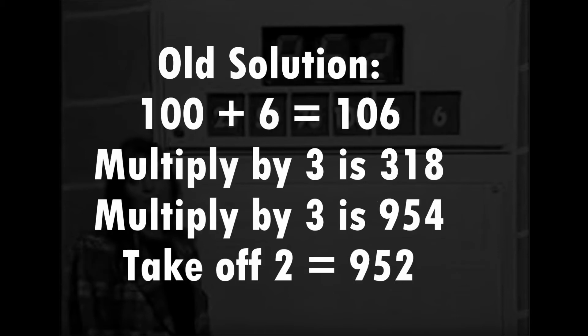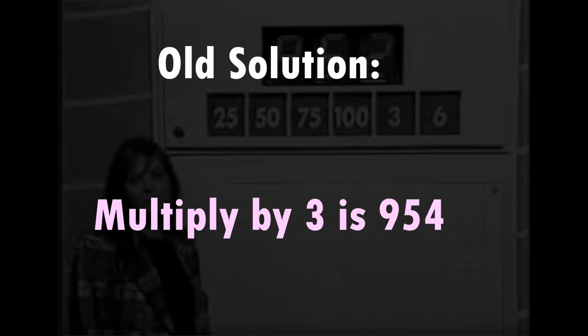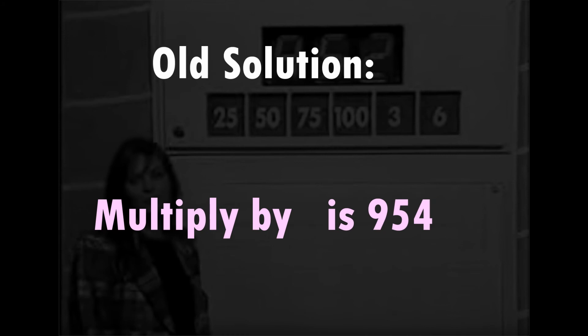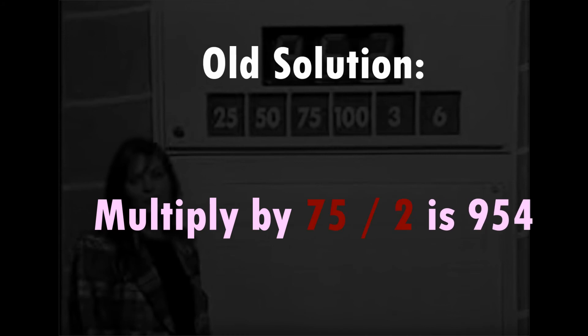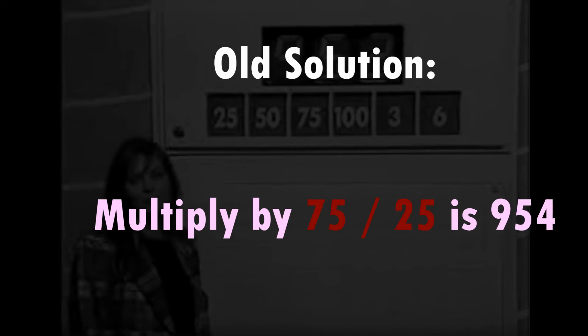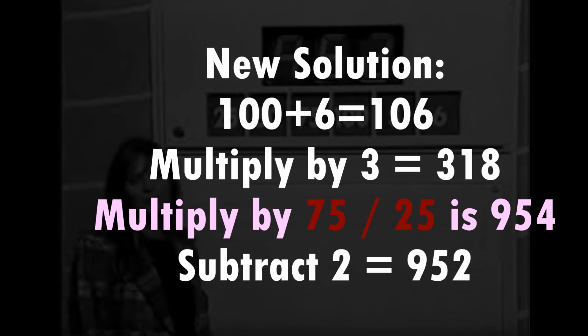So looking at the original solution that we just had, we need to first of all sort out where that 3 is going to come from, that second 3, and also we need to make sure we take off the 2 at the end. So what we do is we use our 25 and our 75 to make that second 3. So we know now that we're going to get our total of 954.